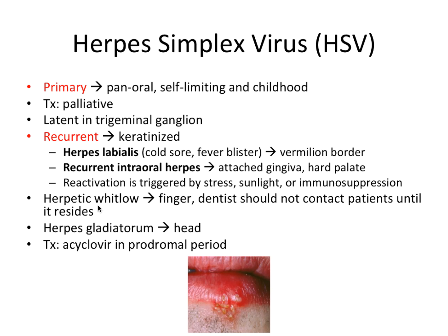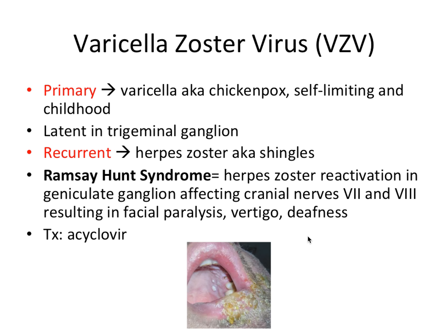Other manifestations of herpes include herpetic whitlow — lesions occurring on the finger — and a dentist should not contact patients until this lesion resolves. Herpes gladiatorum appears on the head, classically in wrestlers. Treatment for recurrent herpes would be an antiviral like acyclovir, given during the prodromal period before the lesion comes on in full force.